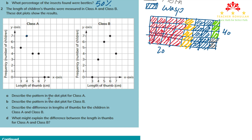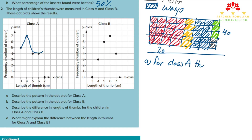Part a says: describe the pattern in the dot plot for class A. The pattern is that it first increases and then decreases. For class A, the pattern goes up and then comes down.